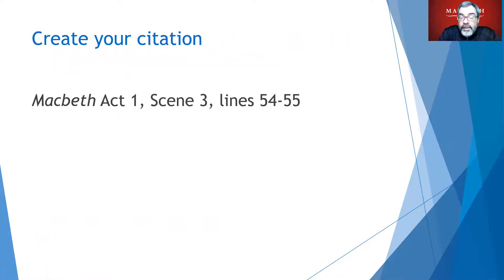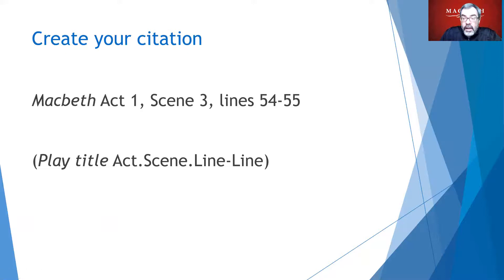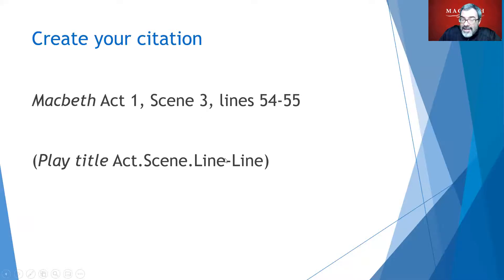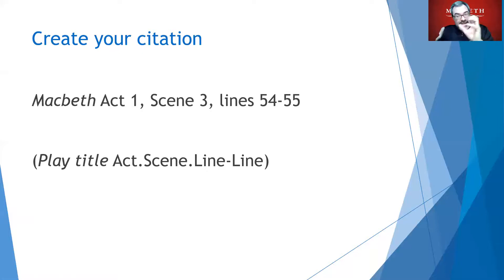Let's talk about the parenthetical citation within the MLA format. Here's the information we have: title is Macbeth, Act 1, Scene 3, lines 54 through 55. The format to follow is: in parentheses at the end of your sentence, put the play title abbreviated — you could abbreviate Macbeth down to 'Mac' — then the act number only, then the scene number, then the line or line numbers. Put a dash between line numbers if the lines are contiguous and side by side, or a comma if you're taking separate chunks that are not adjacent.